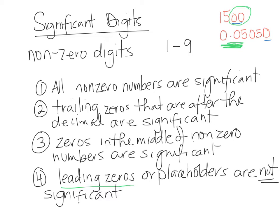To recap: numbers between 1 and 9 (inclusive) are significant. Trailing zeros after the decimal, to the far right after a non-zero number, are significant. Zeros between other non-zero numbers are significant. But leading zeros for decimal places or placeholders are not significant.